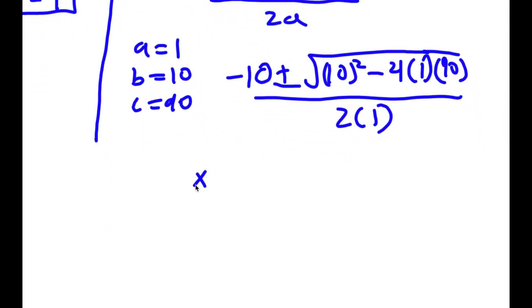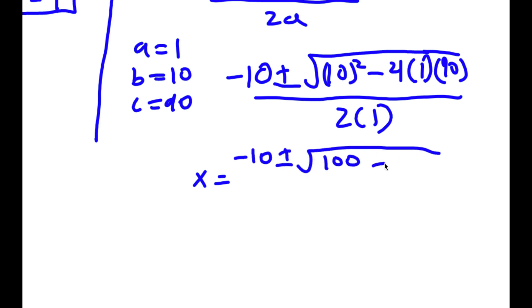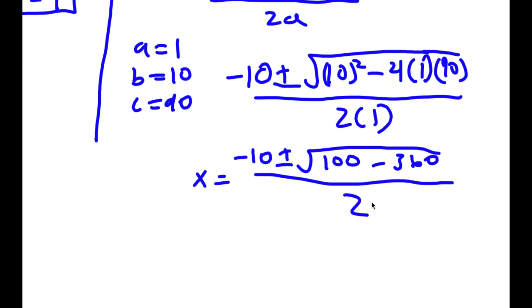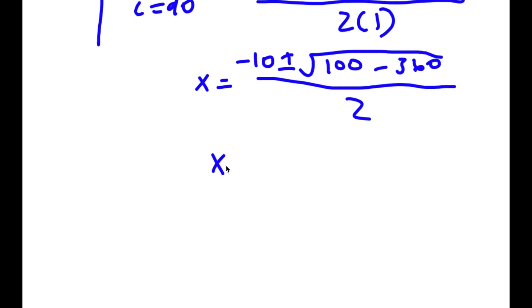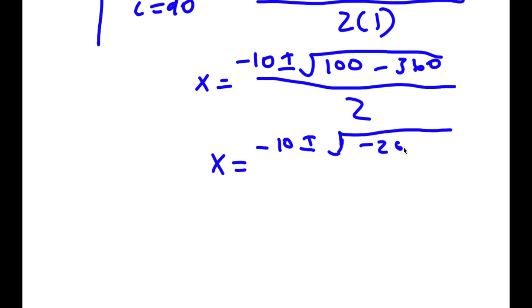Simplifying further, I get negative 10 plus or minus the square root of 100 minus 360, divided by 2. So 100 minus 360 is negative 260, giving x equals negative 10 plus or minus the square root of negative 260, divided by 2.